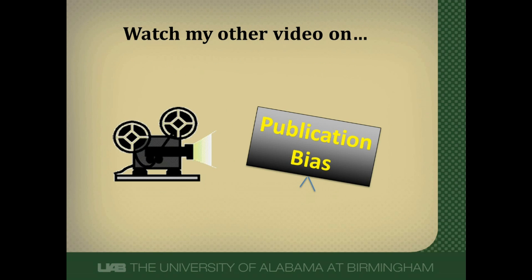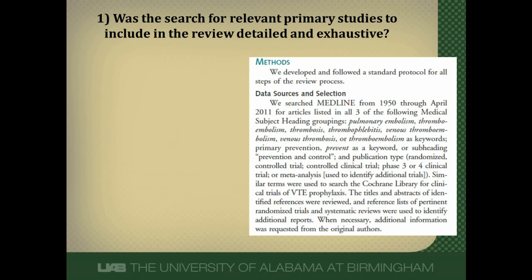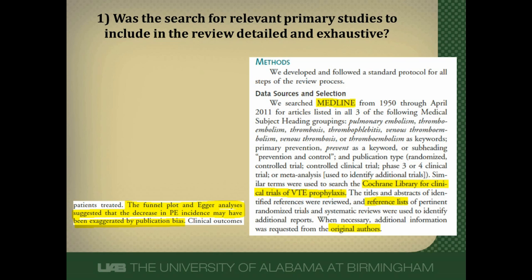This gets to the concept of publication bias — a topic I've made a separate video about. Looking at how our Annals review did: they searched Medline, searched a trial registry, looked at reference lists of retrieved articles and reviews, and contacted original authors. That's a fairly good multifaceted search. However, in the discussion section they did find evidence of some publication bias, so they might have missed some studies. Overall I think they did a fairly good job of finding as much as they could.